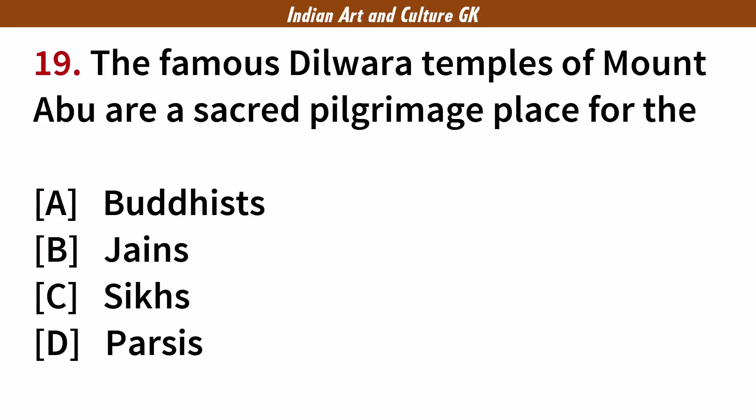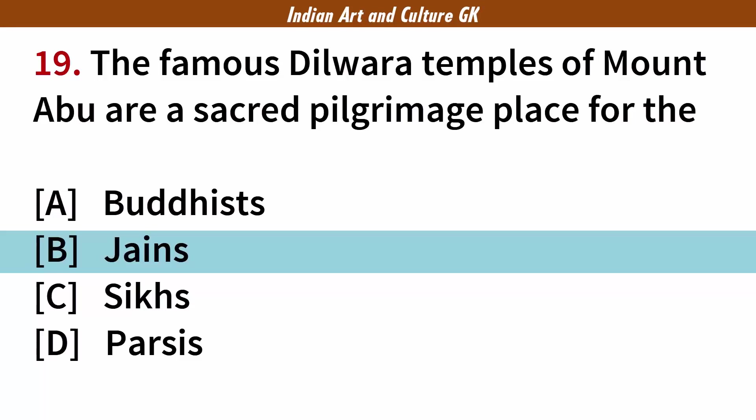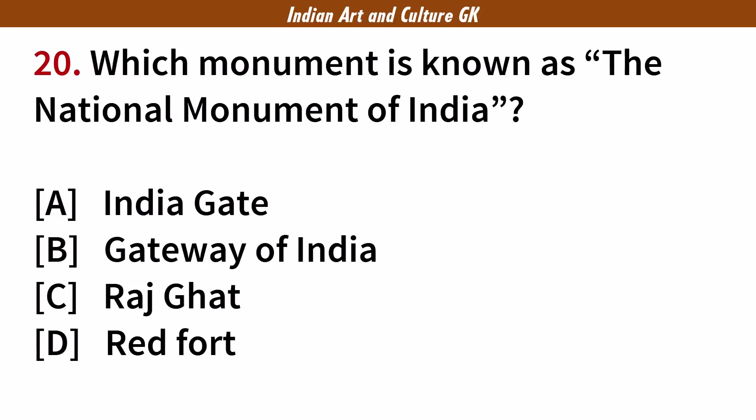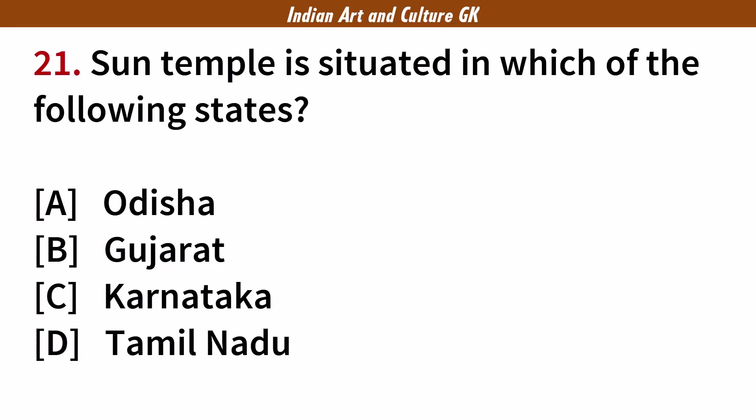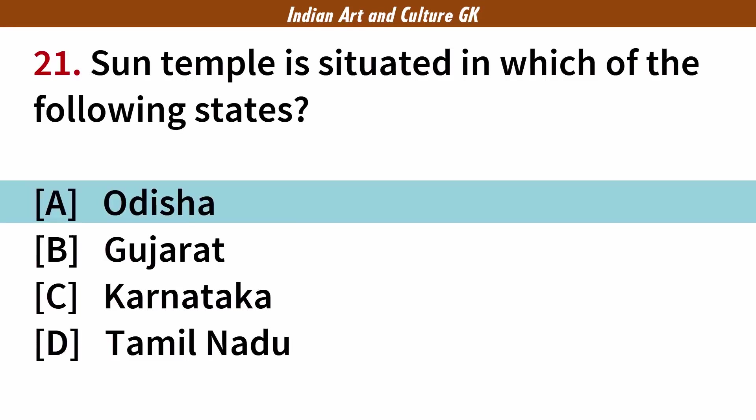The famous Dilwara temples of Mount Abu are a sacred pilgrimage place for the? Answer: B. Jains. Which monument is known as the National Monument of India? Answer: A. India Gate. The Sun Temple is situated in which of the following states? Answer: A. Odisha.